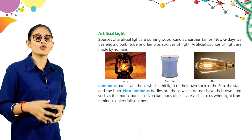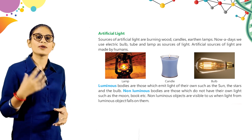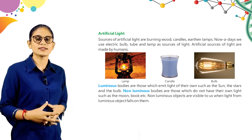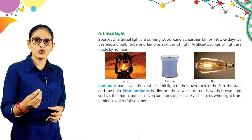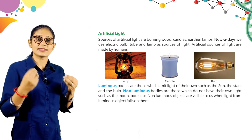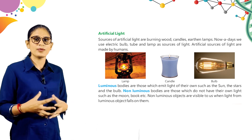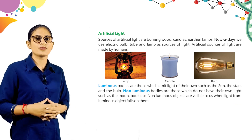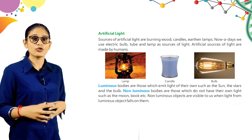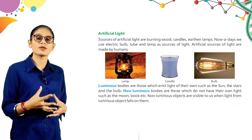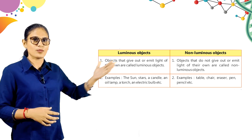Luminous bodies are those which emit light of their own, such as the sun, the stars, and the bulb. Luminous bodies emit their own light. Non-luminous bodies are those which do not have their own light, such as the moon, book, etc. Non-luminous objects are visible to us when light from luminous objects falls on them. Non-luminous objects have no light of their own and can only be seen when light from a luminous object falls on them.